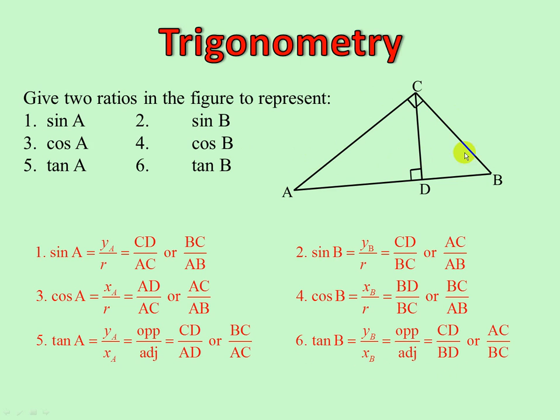And tan of B, in the small, opposite over adjacent, CD over BD, and in the big one, opposite over adjacent, AC over BC.